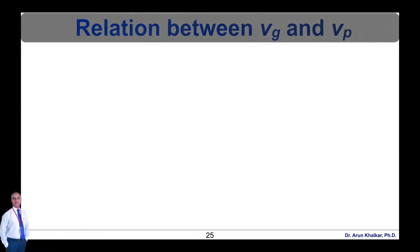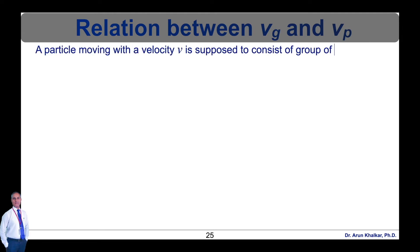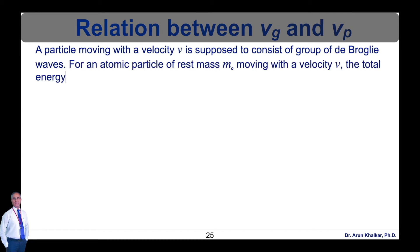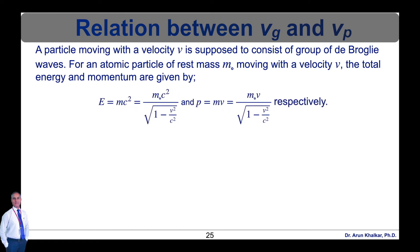Now let's see the relation between group velocity and phase velocity. Consider a particle moving with velocity v, supposed to consist of a group of de Broglie waves. For an atomic particle of rest mass m₀ moving with velocity v, the total energy and momentum according to relativity are: E = m₀c²/√(1 − v²/c²) and p = m₀v/√(1 − v²/c²).